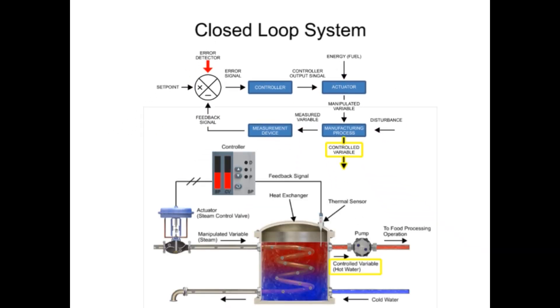The controlled variable is the actual variable maintained in the process. In this example, the controlled variable is the temperature of the water leaving the tank.